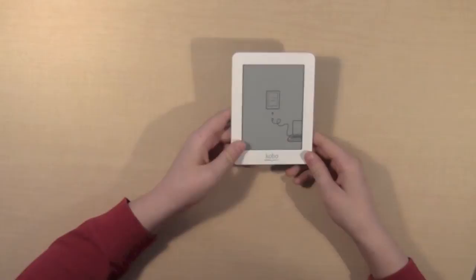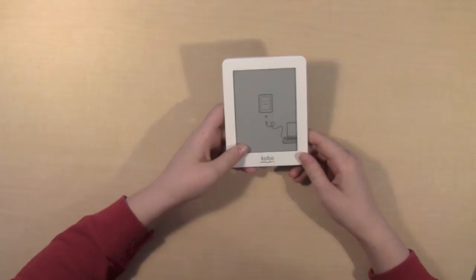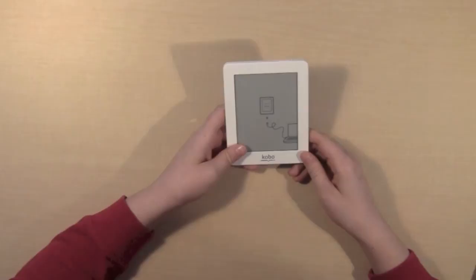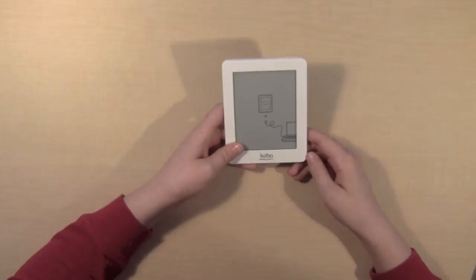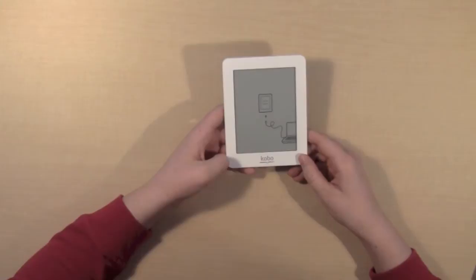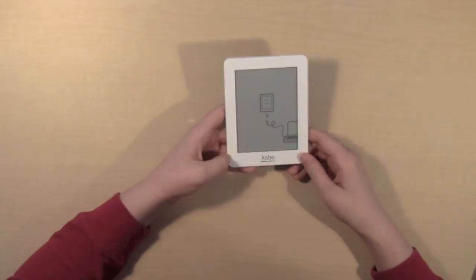The Kobo Mini has a 5-inch e-ink touchscreen display. It has 16 levels of grayscale. It supports EPUB books, PDF, and MOBI. And also supports various image types like JPEG, GIF, and PNG. Also, it supports text files like HTML and RTF. And also supports some comic book files like CBZ and CBR.